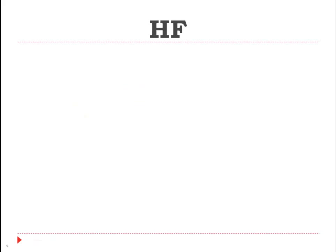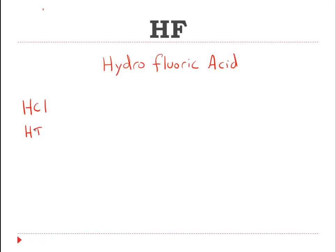Try the next one on your own. Let's name it: hydrogen becomes 'hydro,' fluorine becomes 'fluoric,' and we add the word 'acid' — hydrofluoric acid. Hydrofluoric would be one word. So just a little review: HCl becomes hydrochloric acid, HI becomes hydroiodic acid, and HF becomes hydrofluoric acid. Those are the three examples for binary compounds that are acids.